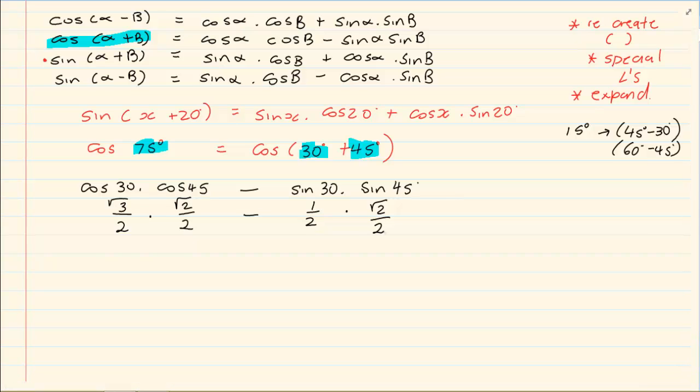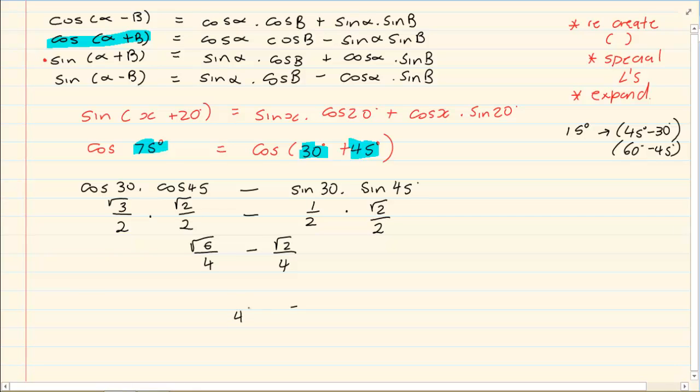After that it is your standard algebra. Now most of your calculators would immediately be able to give you an answer, but if you do it step by step we are multiplying. Root 3 times root 2 is root 6, 2 times 2 is 4, minus root 2 times 1 is root 2, 2 times 2 is 4. Then we put it over a common denominator, giving us our final answer without the use of a calculator.